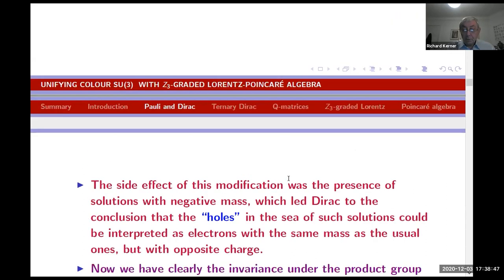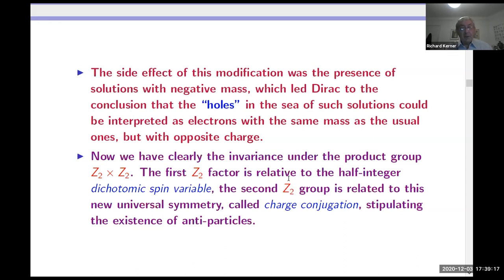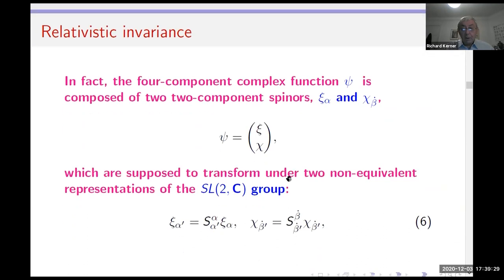The price to pay for Lorentz invariance was the introduction of negative mass or negative energy. Pauli was scared of this, but Dirac accepted it and predicted the positron. The positron can be regarded as an electron with negative energy or negative mass — they are equivalent — and positrons have of course been discovered.